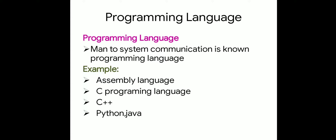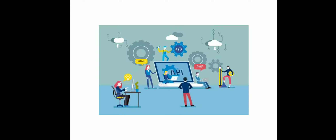Examples of programming languages by level: assembly language is a low-level language, C is a mid-level language, and C++, Python, and Java are high-level languages. C is also a system programming language.